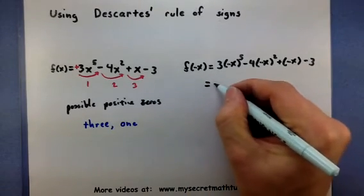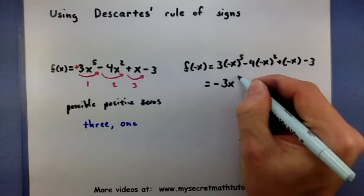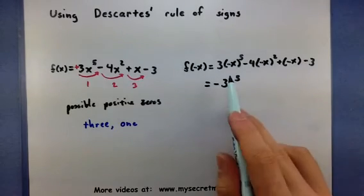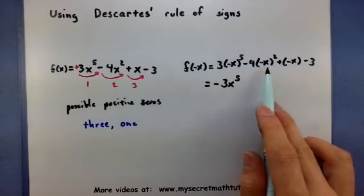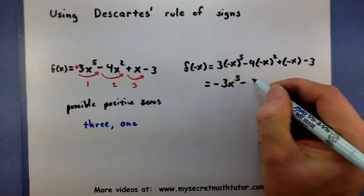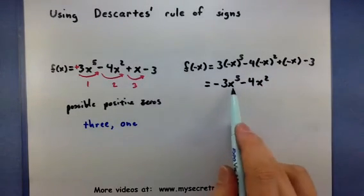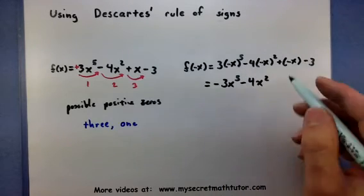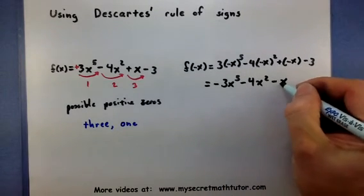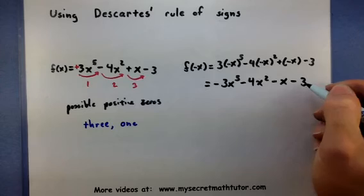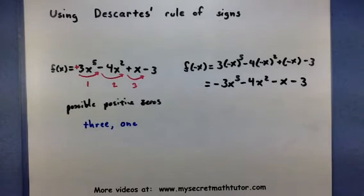So, negative x to the fifth will be minus three x to the fifth. So, I've moved that negative sign right out front. Negative x squared, well that negative sign is gone. This negative sign was actually already there. Minus x and minus three.